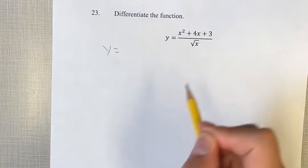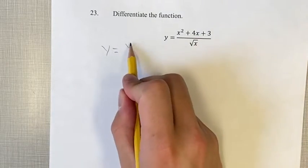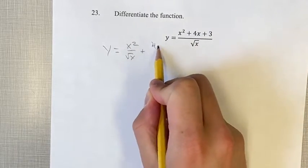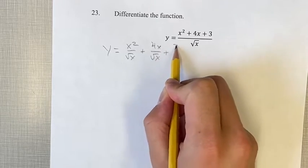It'll be a little bit easier to do this if we separate these three. So x squared over root x plus 4x over root x plus 3 over root x.